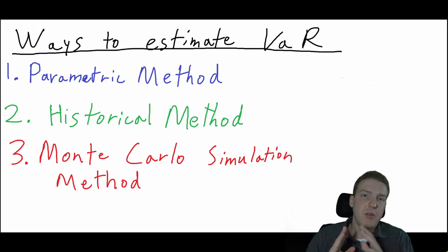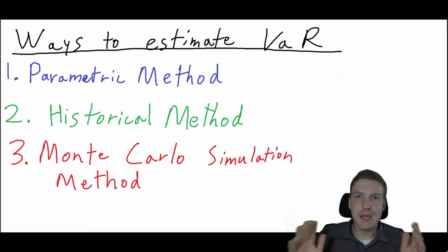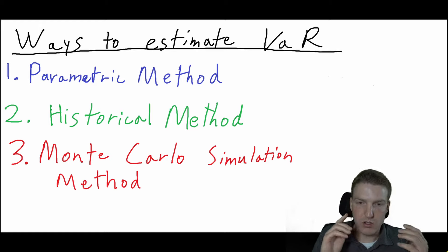Now let's talk about the three primary ways to estimate VaR. The first is the parametric method, also known as the variance-covariance method. This is basically what we just did—you assume a certain mean, standard deviation, and distribution, then calculate VaR based on those inputs.